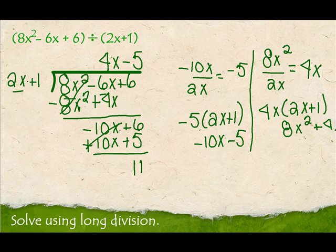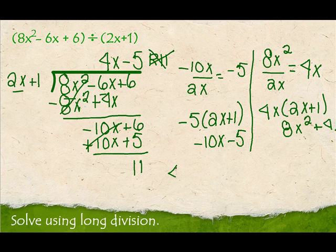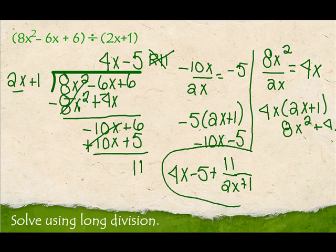2x won't go into 11, because there's no x there. So this becomes my remainder. We're really used to writing remainder 11, but we're not going to do that in algebra. So the quotient is 4x minus 5, plus your remainder 11 divided by 2x plus 1. And that's how you solve using long division.